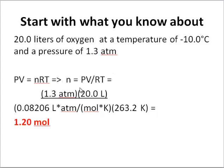So solve for the number of moles, which is PV over RT. We have all the units correct. 1.3 atm over 20 liters, divided by the gas constant, divided by the temperature. Here, negative 10 Celsius is 263.2 Kelvin. We subtract 273.15. And the answer, which I show in red, is 1.20 moles.